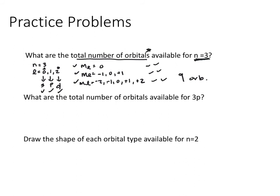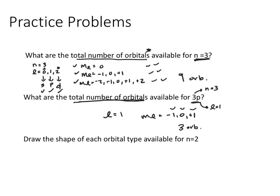Now let's find the total number of orbitals for 3p. The 3 corresponds to N, but the question specifies the 3p orbital type, so P tells us L=1. Solving for M sub L with L=1 gives negative 1, 0, positive 1 — three different answers — so there are 3 orbitals in the 3p sublevel.